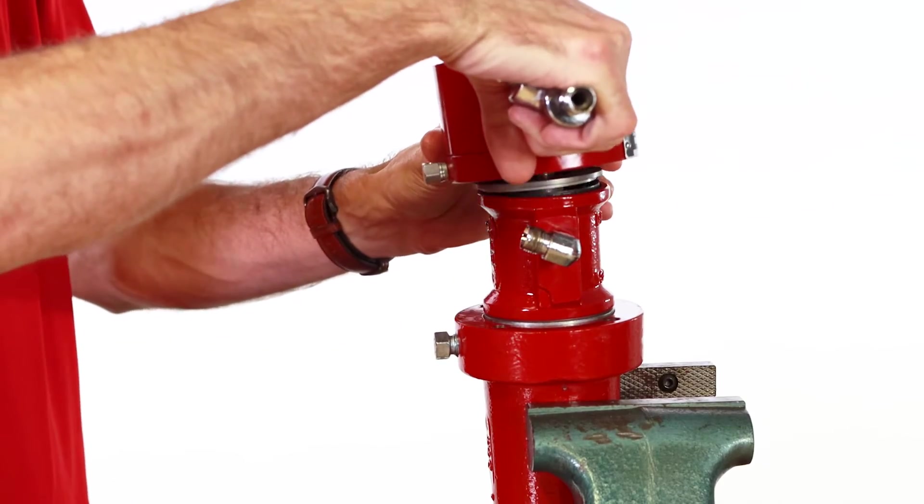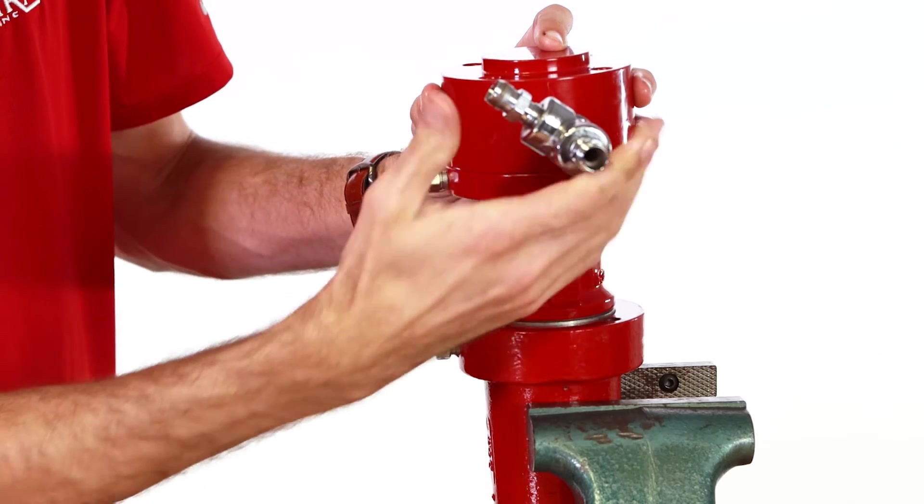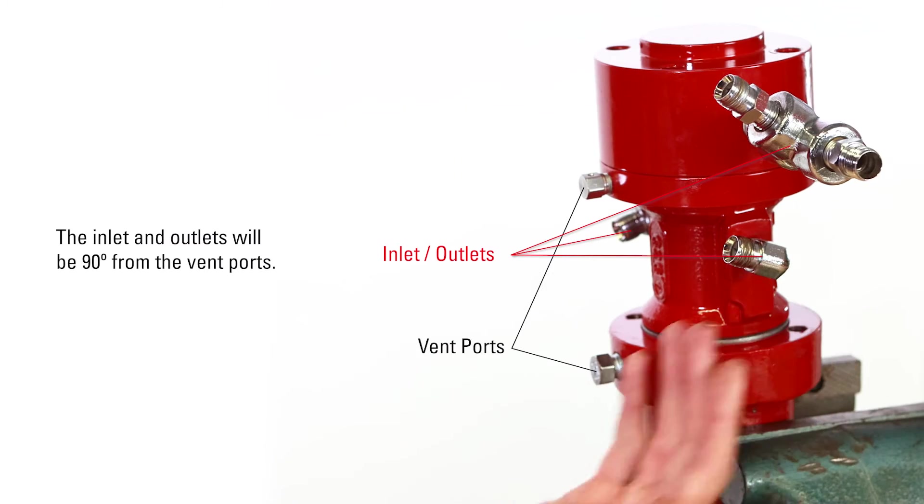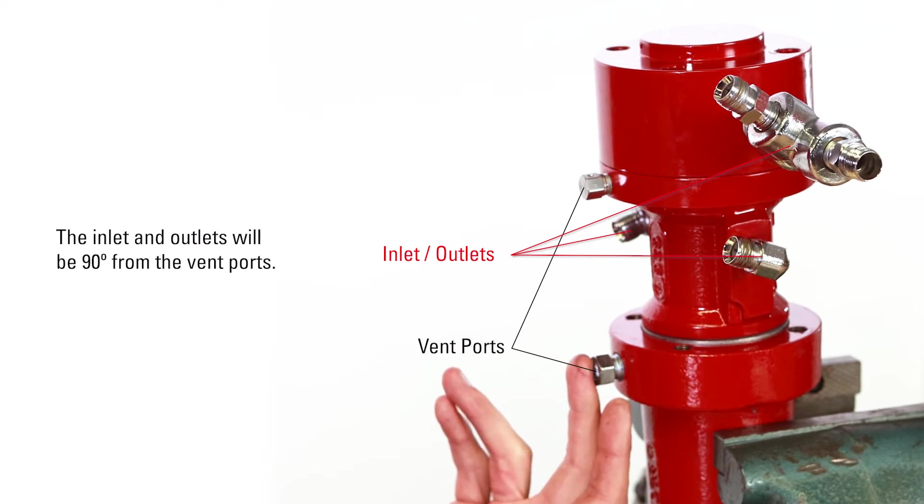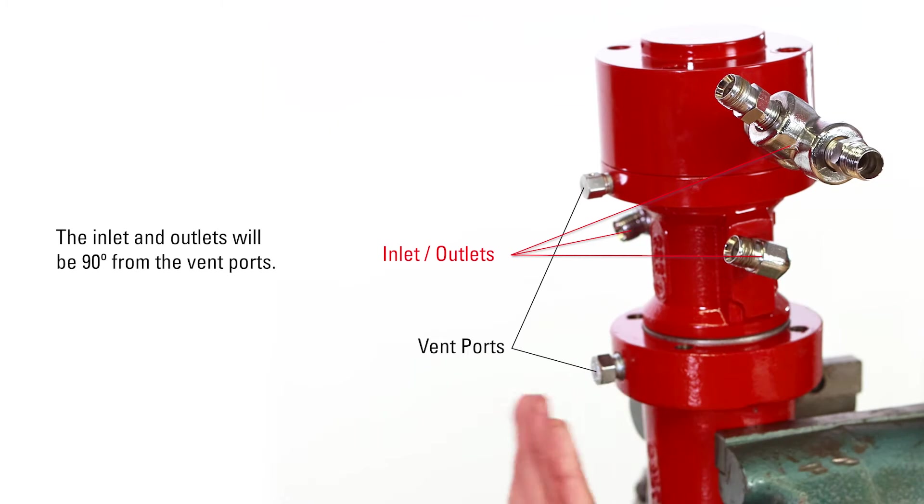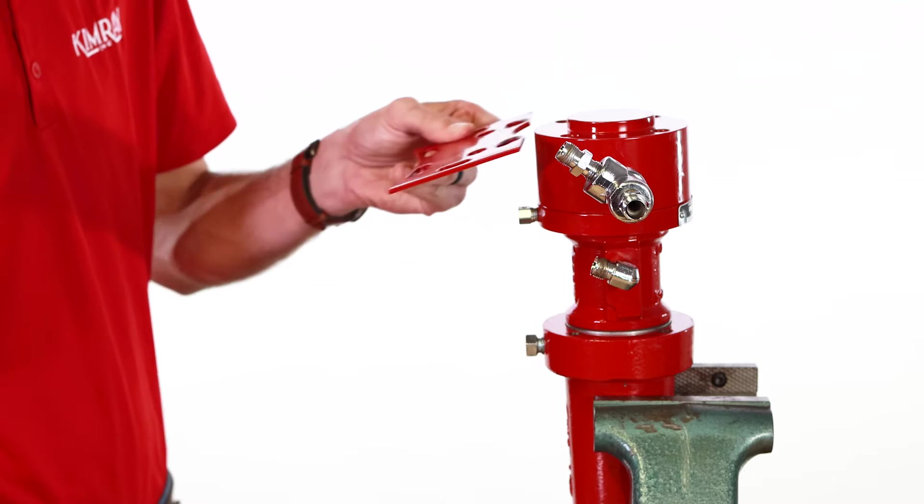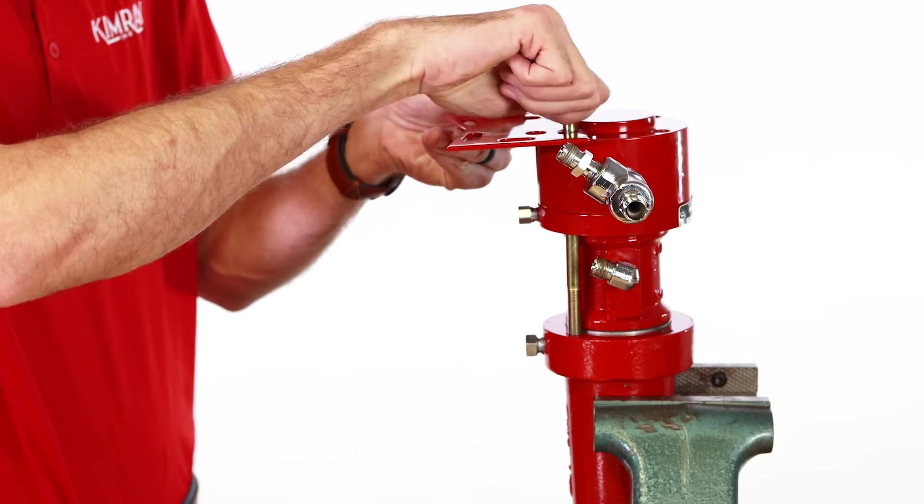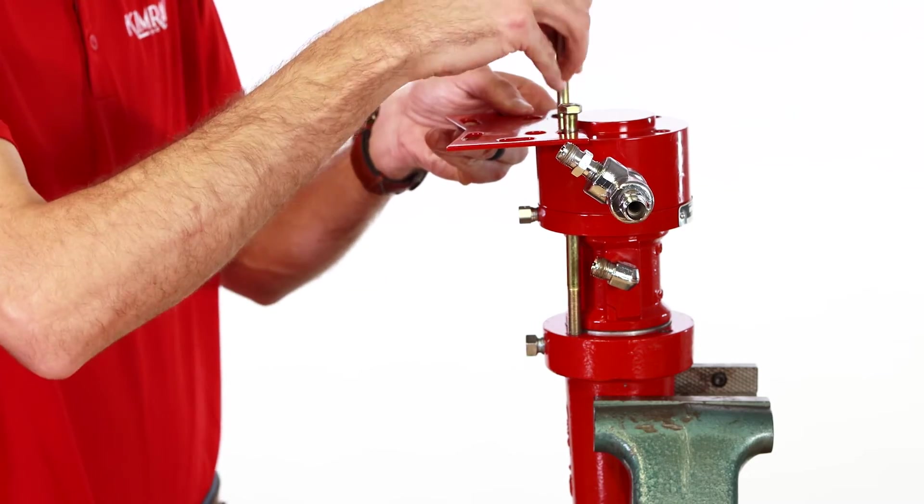Using your markings align the bonnet, pilot, housing and body. The inlet and outlets will be 90 degrees from the vent ports. Replace the screws and bracket and tighten with a crisscross pattern evenly distributing pressure as you tighten.